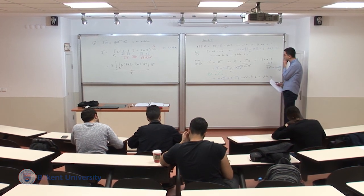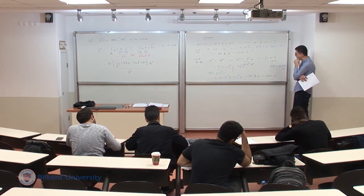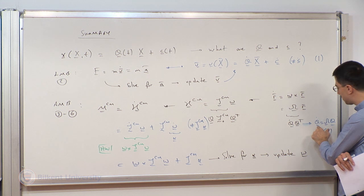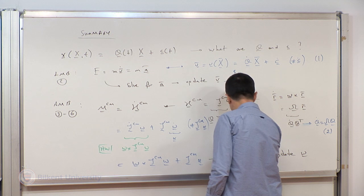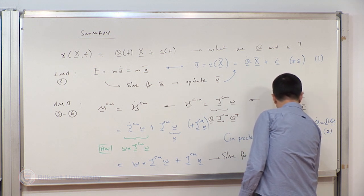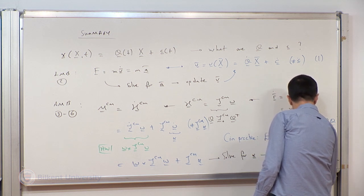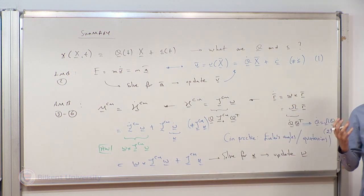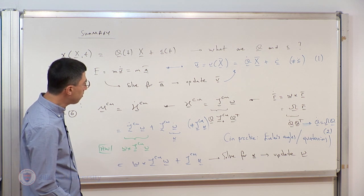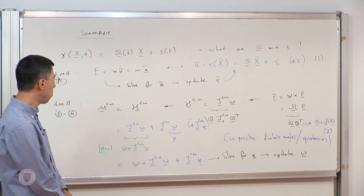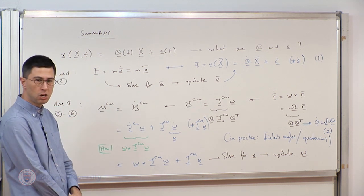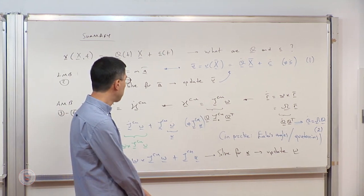Conceptually I have enough information to update the configuration of this rigid body. In practice, is that what you do? Probably not. In practice, one would like to describe the orientation of the object in a more elegant manner — not directly through Q. One way to do that is to use Euler angles, or something called quaternions, to describe and update the orientation of a rigid object in 3D. The procedure might differ in practice, but conceptually, using continuum mechanics language, we've compactly derived the set of expressions that govern the motion of a rigid body.